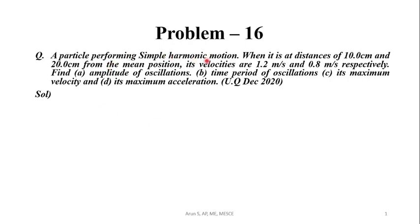A particle performing simple harmonic motion. When it is at a distance of 10 cm and 20 cm from the mean position, its velocities are 1.2 m/s and 0.8 m/s respectively. Find: first, the amplitude of oscillation; second, the time period of oscillation; third, its maximum velocity and maximum acceleration.